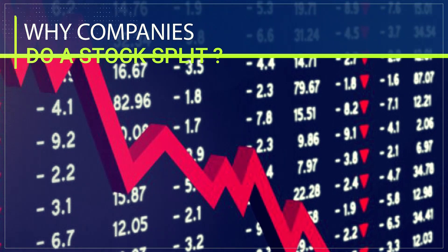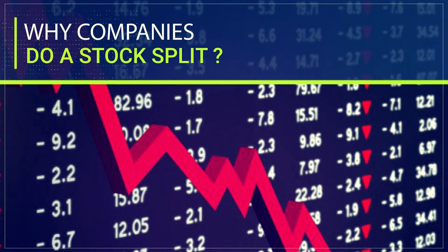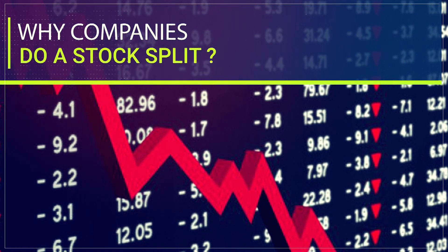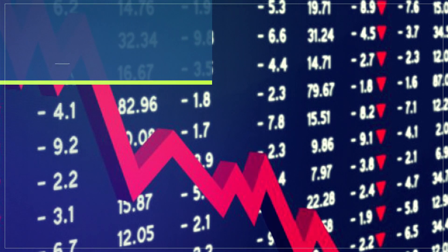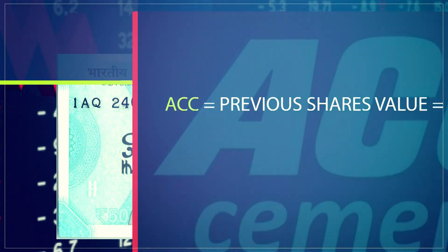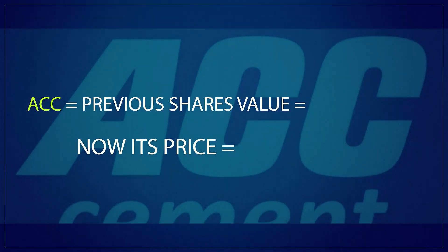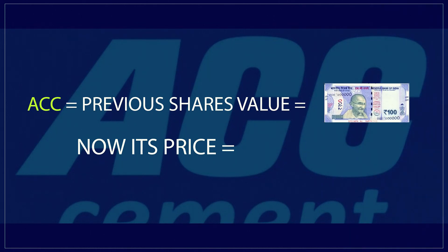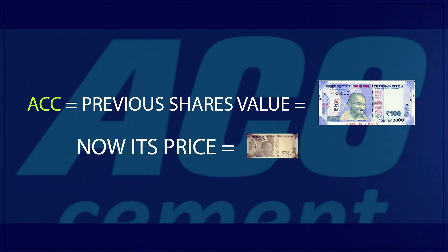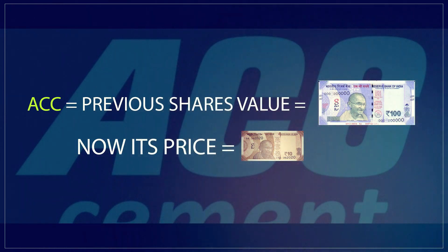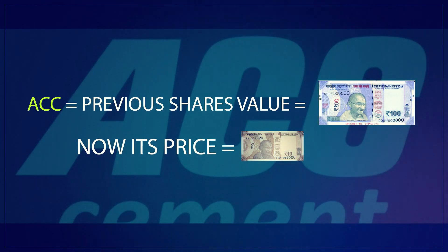Why do companies do a stock split? A stock split is done by decreasing the face value of the share. The face value of the share is the value printed on the share, like that of a rupee note — that is the base price of the stock. Previously, the face value of high-value companies like ACC and others used to be 100; now the normal face value is 10 only. Depending on the company's performance, the shares come public with a premium to the face value.